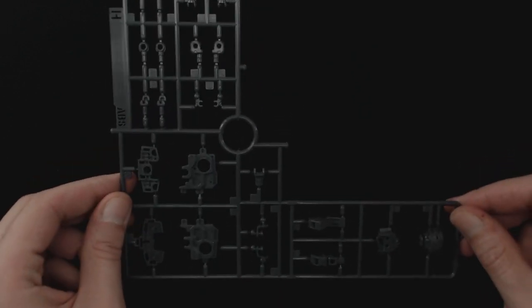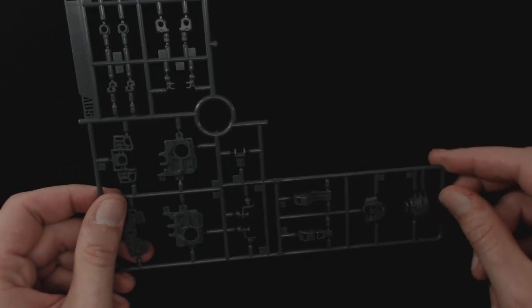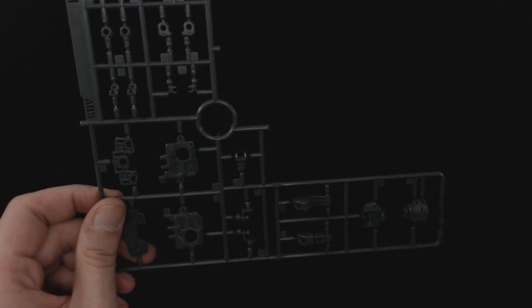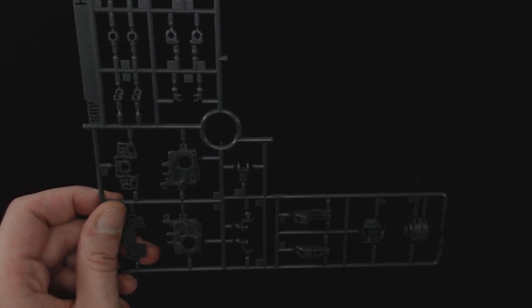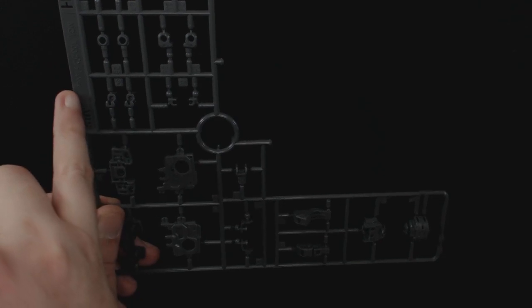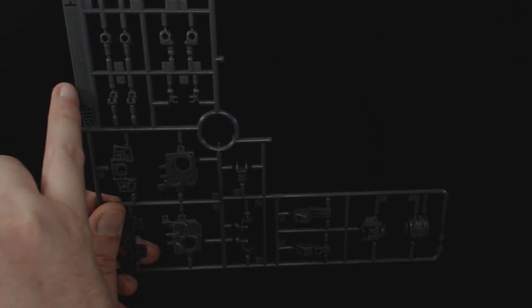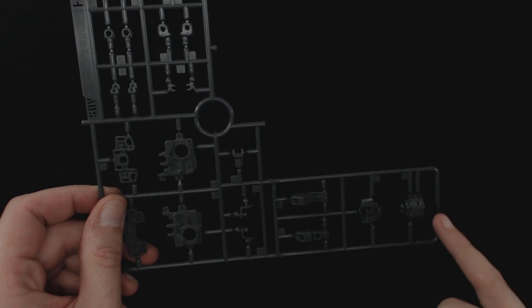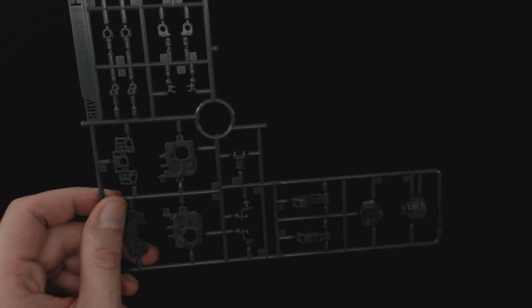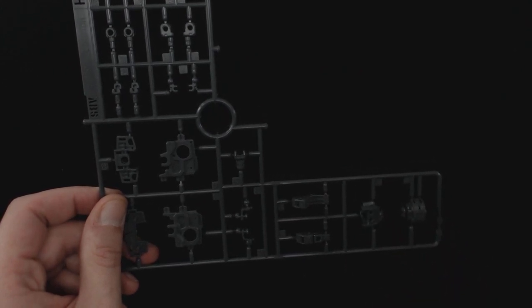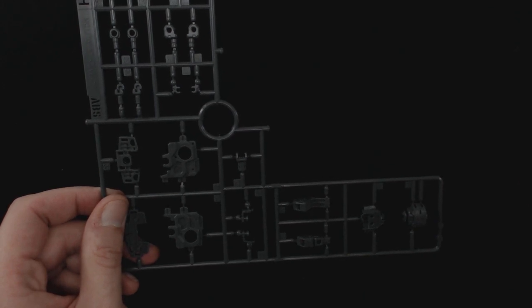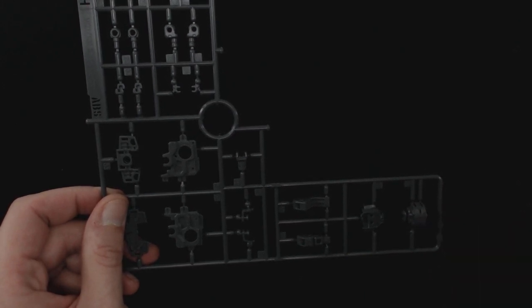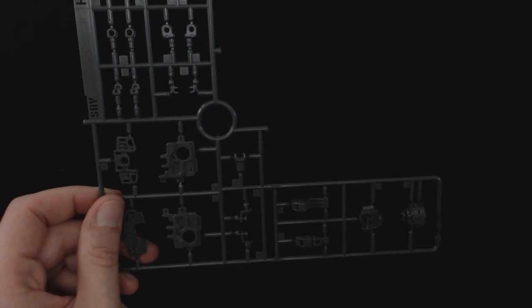Runner H, again in that dark gray. And I believe I will have to check on it because this says Master Grade RX-78-2 version 2.0. You get head pieces in here and yet there's head pieces on the other runner. So we'll have to see which ones get used for what. I think these are for the old head though. So I'm not too sure which pieces. I will show you all the leftover parts.